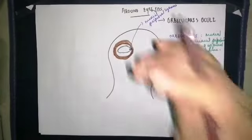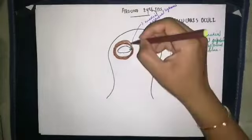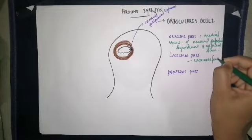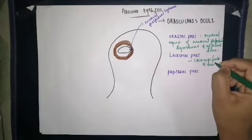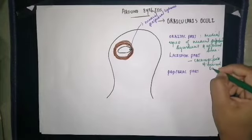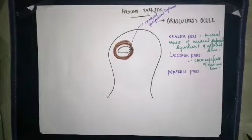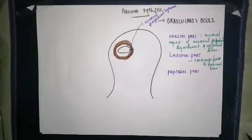The lacrimal part is not so important. It originates from the lacrimal fascia and the lacrimal bone, and lies deep and lateral to the lacrimal sac. Its fibers extend to the upper and lower eyelids, where they get inserted.